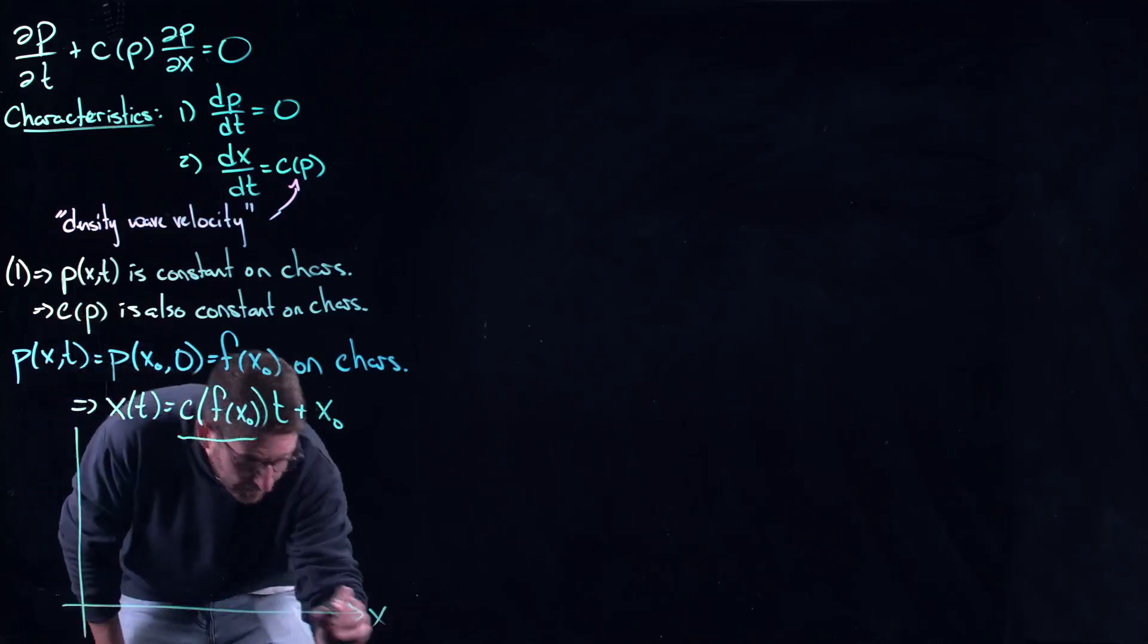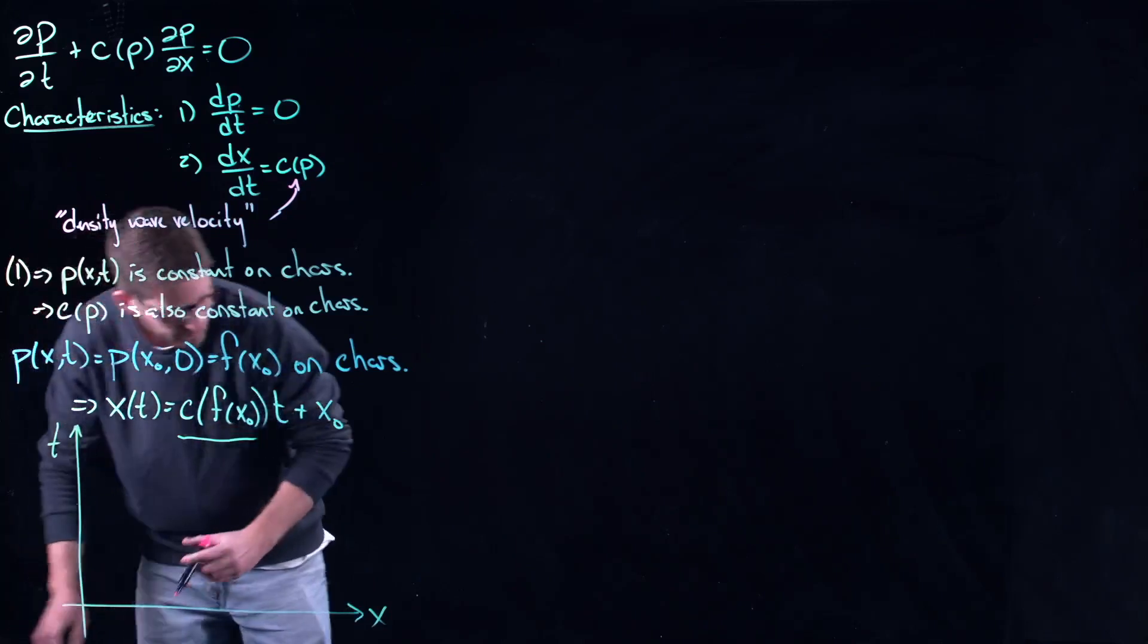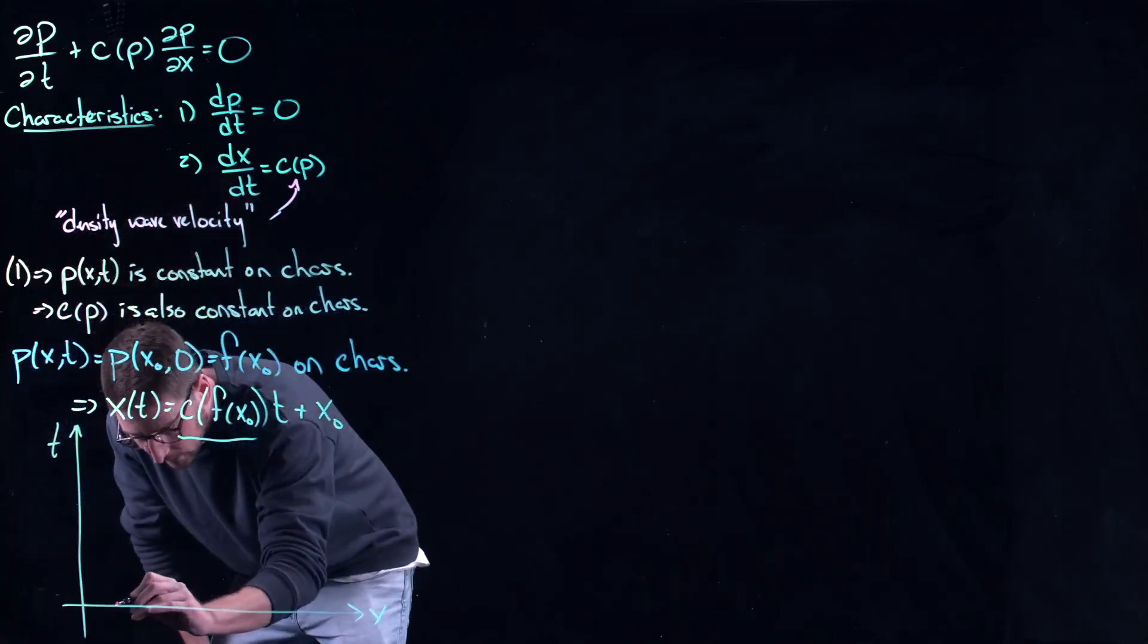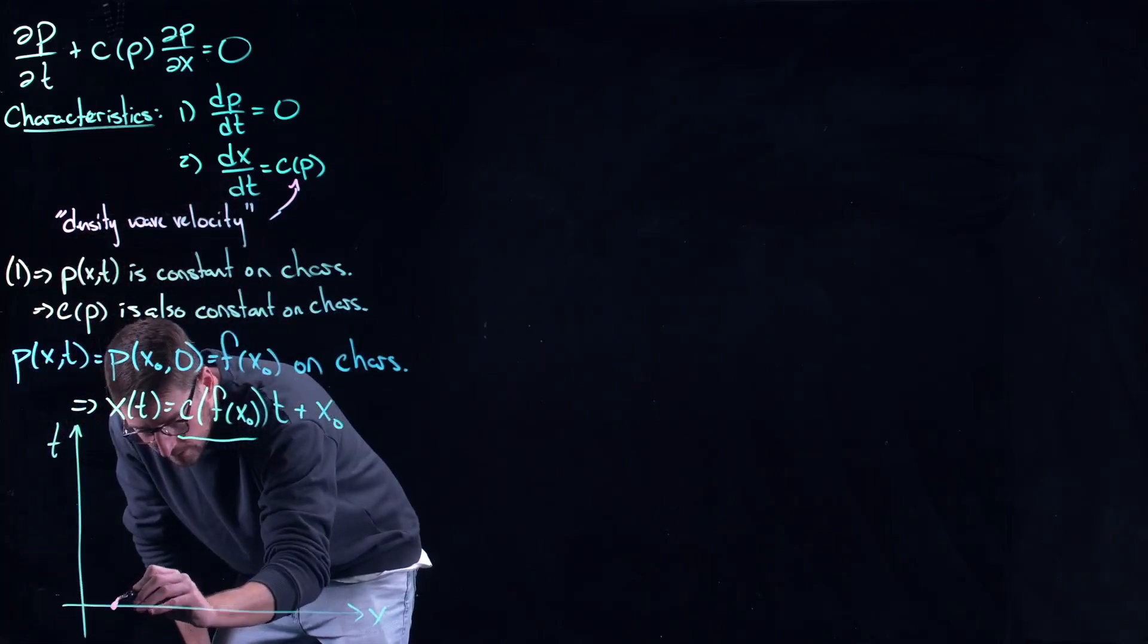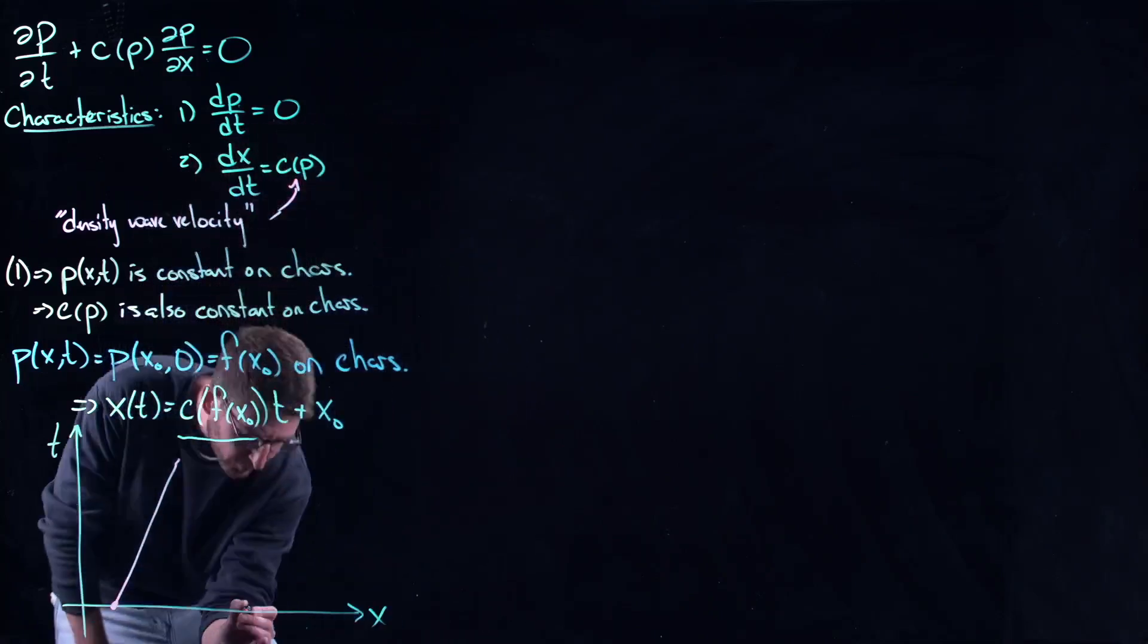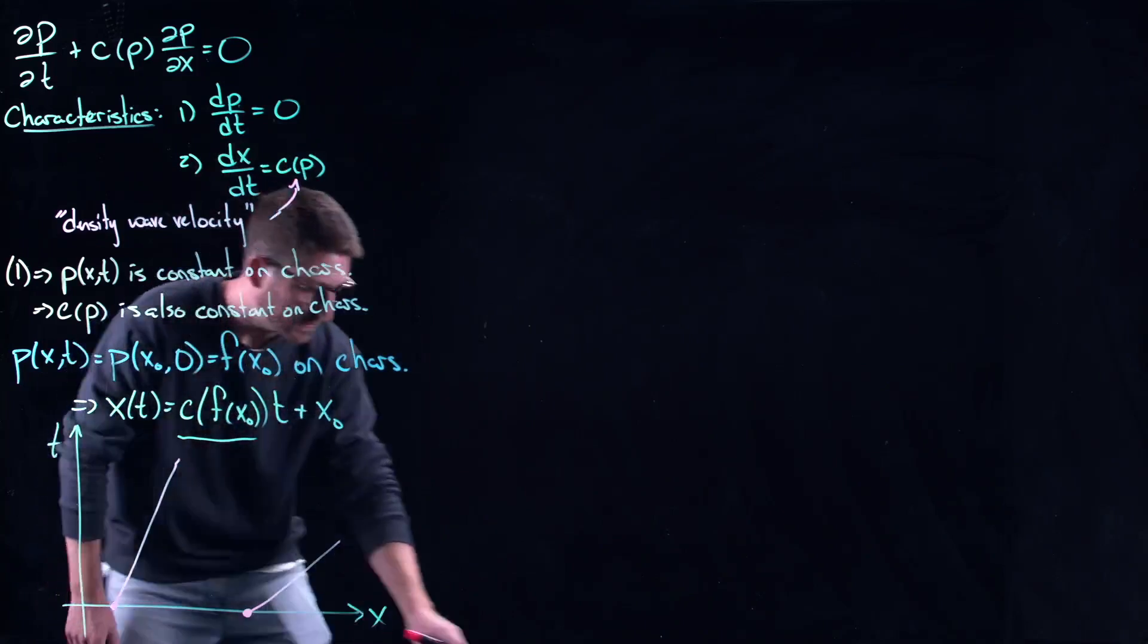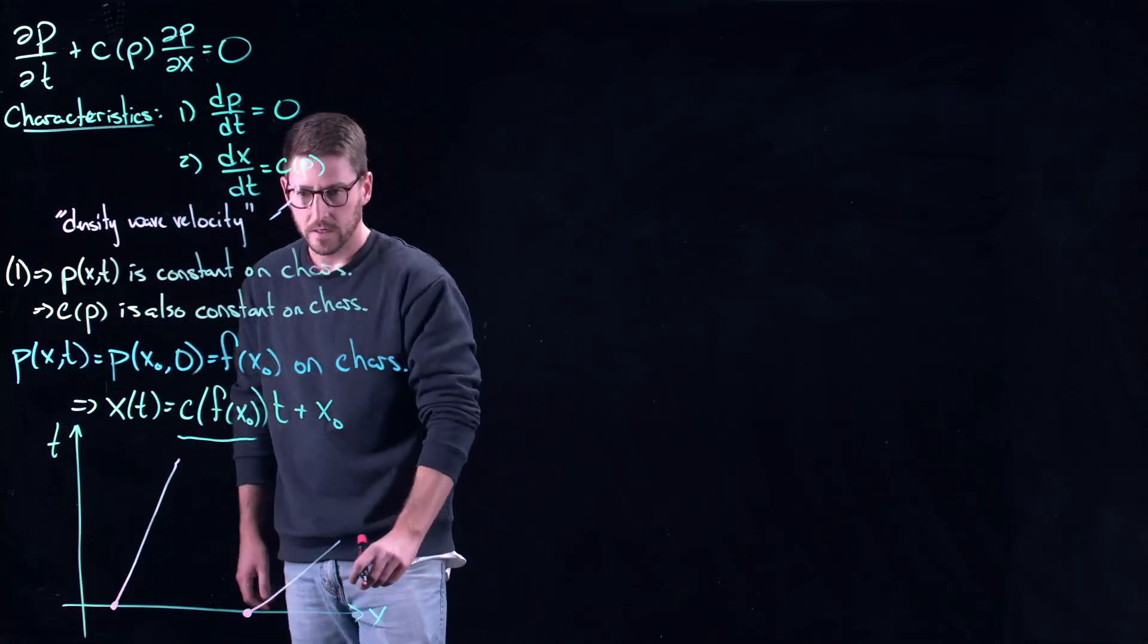Here's how you can think about it. If this is a space-time plot and we try to put our characteristics on it, maybe for example here my slope is such that my characteristic might look like this, or somewhere further out the slope might be such that the characteristic looks like that.